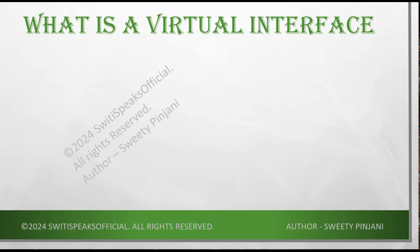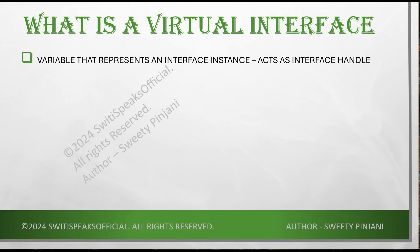First, let's understand what is virtual interface. We know what is interface. Virtual interface is nothing but a pointer or a variable that represents an interface. If you know C or C++, you would know what a pointer is — think of it as a pointer to an interface. It acts as a handle to an interface. It is not a physical interface; it points to the physical interface.